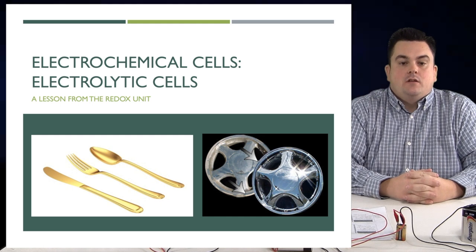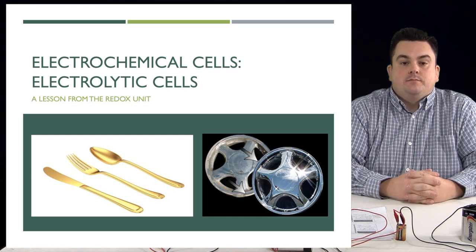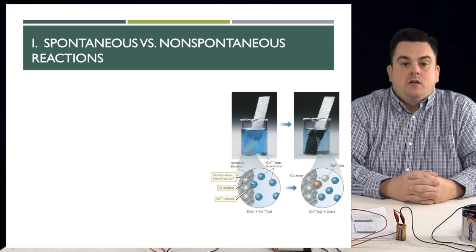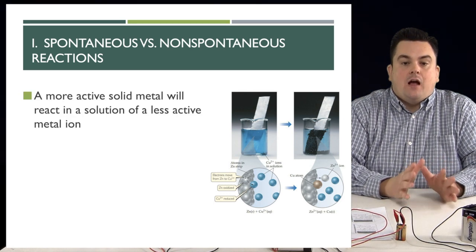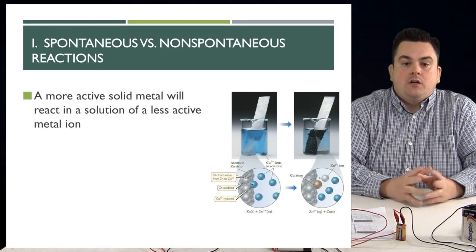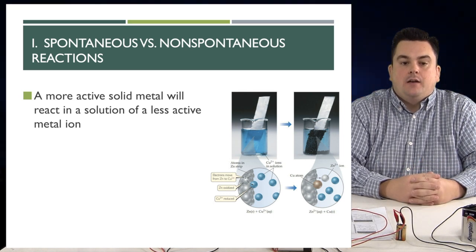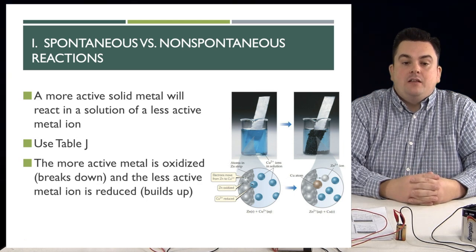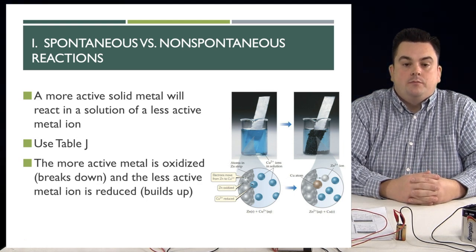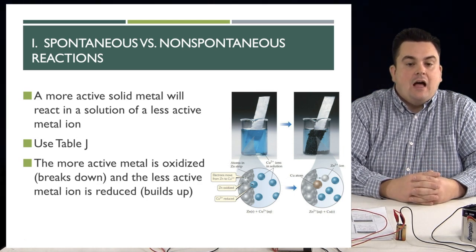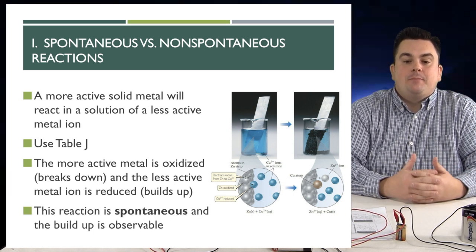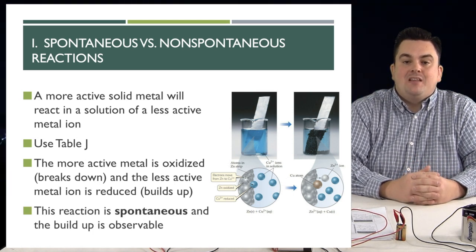Electrolytic cells, a lesson from the redox unit. Spontaneous versus non-spontaneous reactions. A more active solid metal will react with a solution of a less active metal ion. We use table J. The more active metal is oxidized, breaks down. And the less active metal ion is reduced. It builds up.